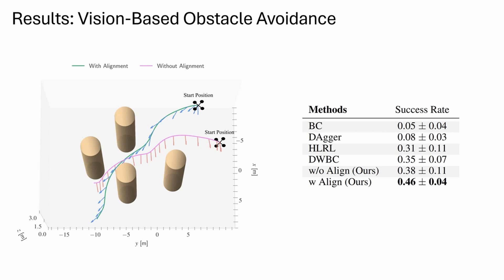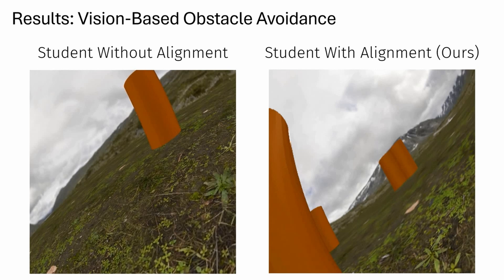As can be seen in the table, our approach with alignment achieves the highest success rate with 0.46. If we look at the student rollout trajectories, we observe that the policy learned through our approach adjusts the viewing direction during flight to align with the velocity direction. This ensures that all encountered obstacles are visible in the camera's field of view.